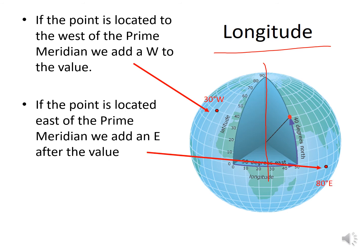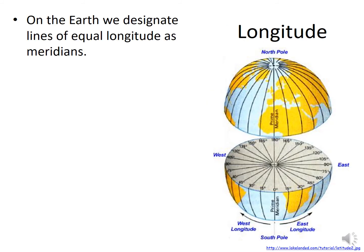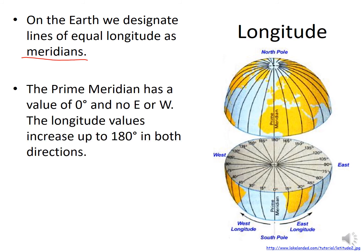If the point is to the east of the prime meridian, we add an E after the value. On Earth, we designate lines of longitude as meridians. The prime meridian has a value of zero — no East or West. Longitude values increase up to 180 degrees in both directions. Remember, 90 degrees was the top of the pole, 90 at the bottom — so 90 plus 90 gives us 180.